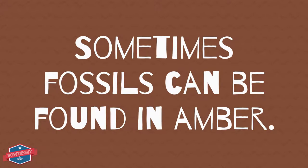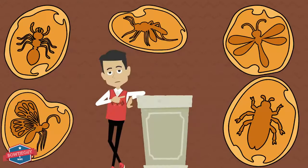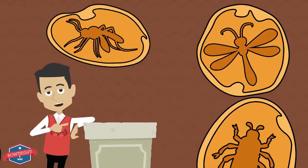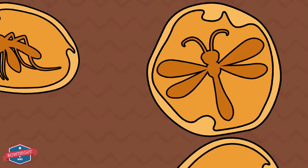Sometimes fossils can be found in amber. What is amber? Amber is a hard substance made from the hardened sap of some evergreen trees. Here you can see many examples of fossils that are encapsulated by amber.